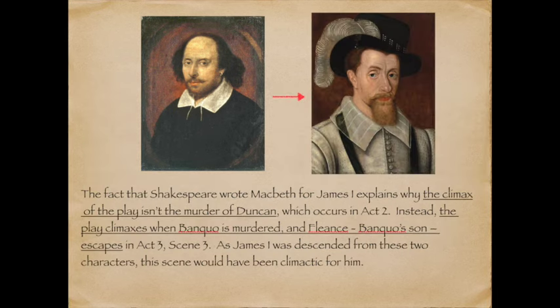Understanding that context explains one of the mysteries of Macbeth — why Duncan was killed in Act 2. It seems too early, since normally the climax happens in Act 3. Well, for James I, that would have been the climax, because Act 3 is when Banquo, his ancestor, is murdered and Fleance, Banquo's son, escapes. So James would have been on the edge of his seat for that one.